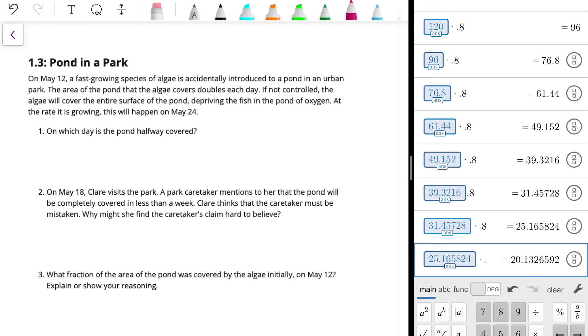Okay. Let's take a look at 1.3. On May 12th, a fast-growing species of algae is accidentally introduced to a pond in an urban park. The area of the pond that the algae covers doubles each day. If not controlled, the algae will cover the entire surface of the pond, depriving the fish in the pond of oxygen. At the rate it is growing, this will happen on May 24th. So on which day is the pond halfway covered? Well, if the algae coverage is doubling each day, then the day before it's completely covered is when it will be halfway covered. So that would be May 23rd, because it's doubling each day. So when you double half of the pond, the whole pond is now covered.